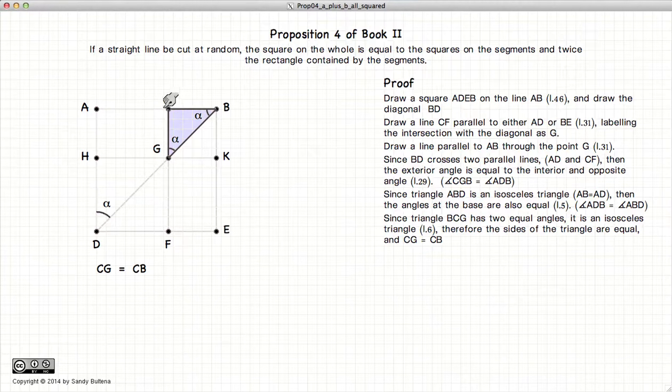Looking at the small triangle CGB, the two base angles are equal. By Proposition 6, this is an isosceles triangle. The important result is that CB equals CG.